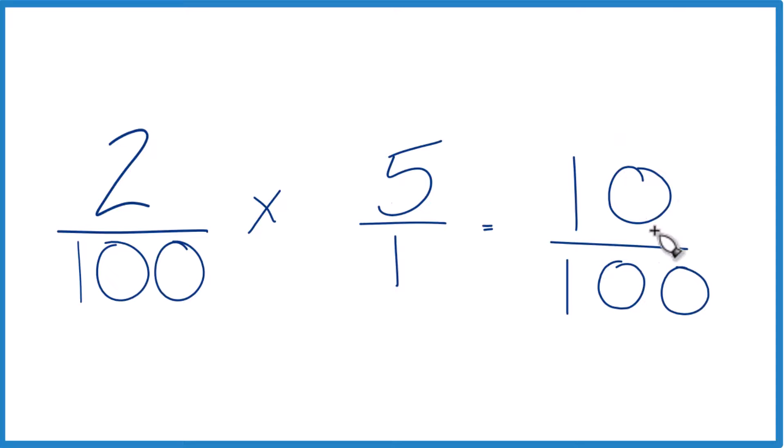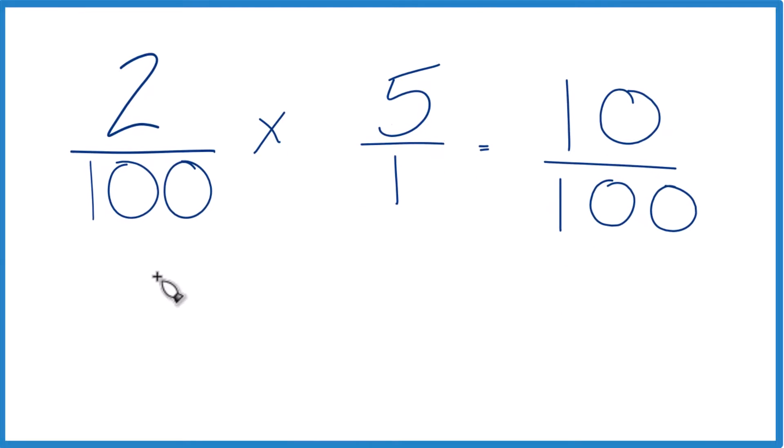And we can simplify this. 10 goes into itself one time, and it goes into 100 ten times. So we end up with 2% of 5 is 1 tenth.